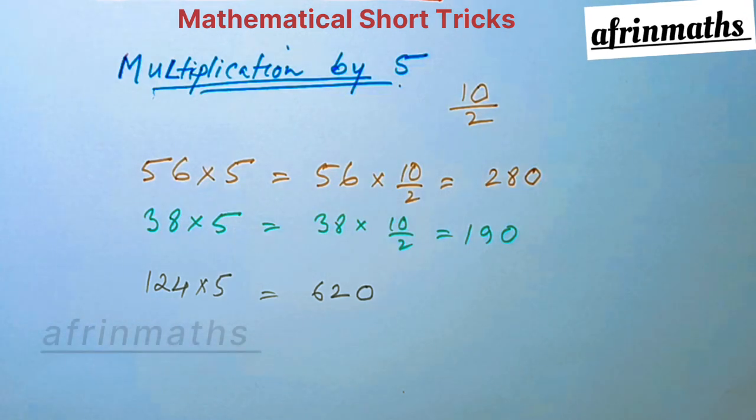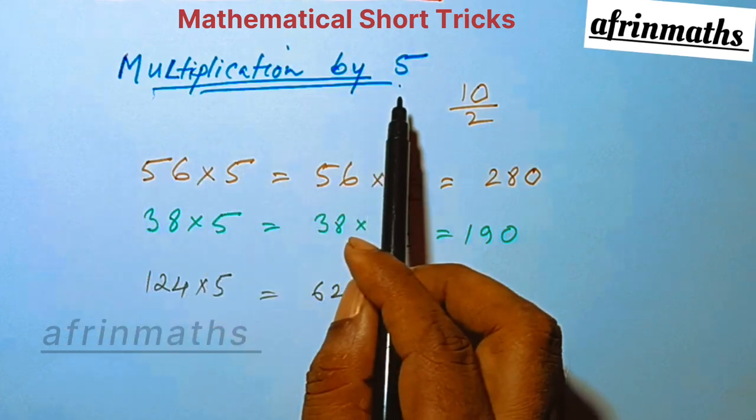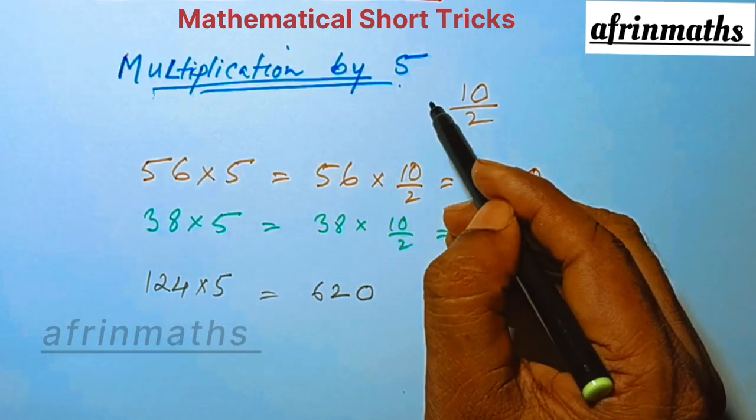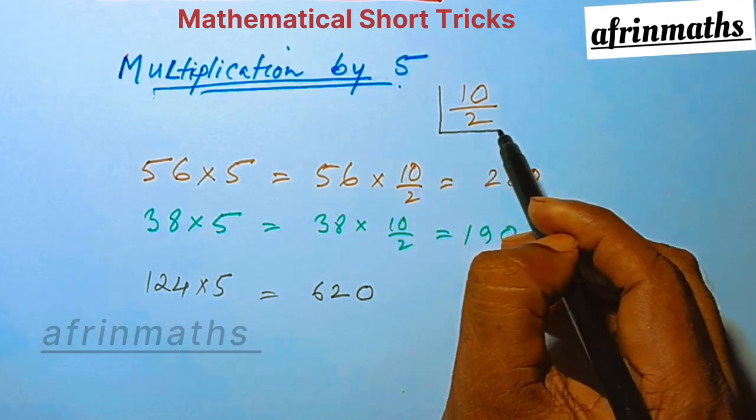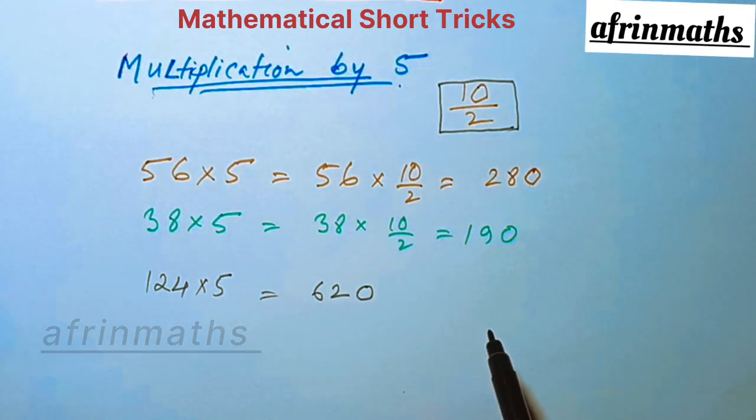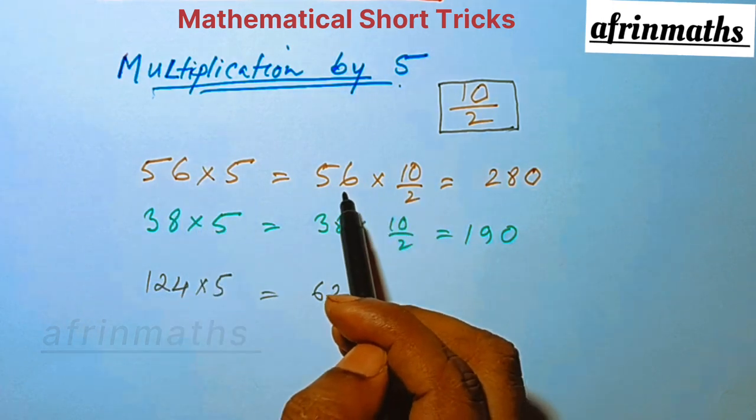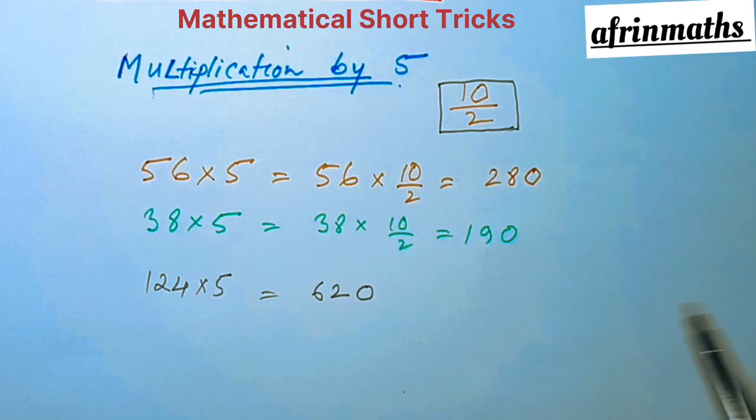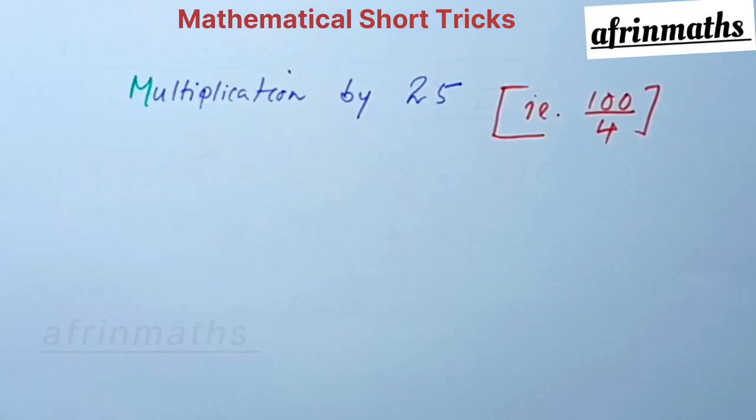We have learned the technique. This is the way to multiply with 5. We have to just multiply by 10 by 2, and we have to take the half of the number and put a 0. Thank you.